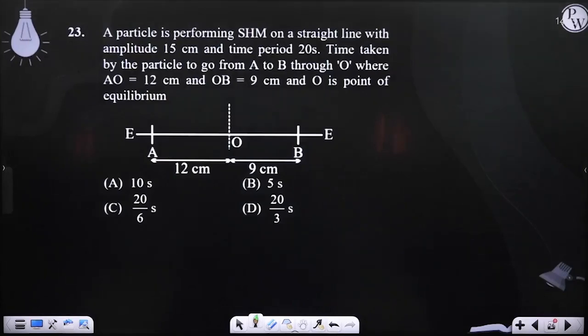Time taken by the particle to go from A to B, particle wants to go from A to B through O. A to B is 12 cm and OB is 9 cm. O is the point of equilibrium.